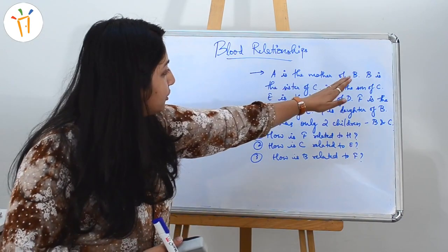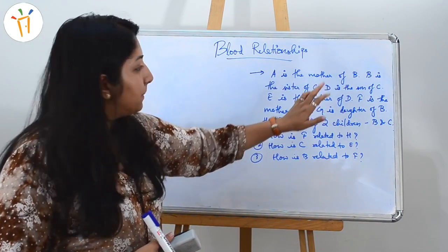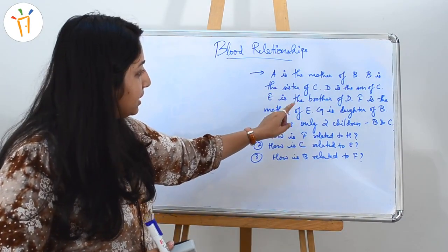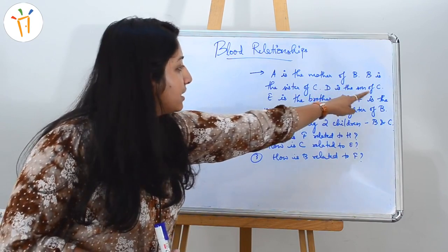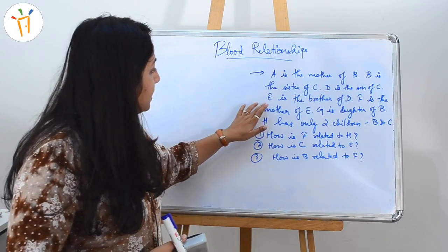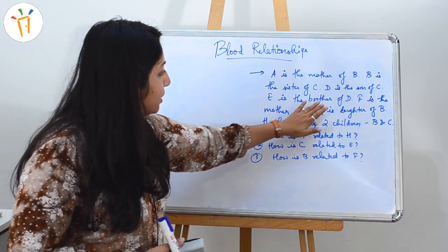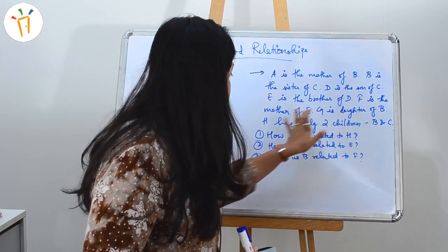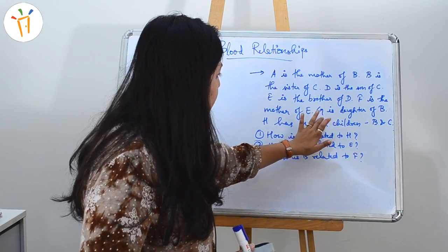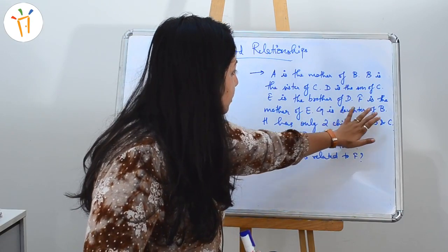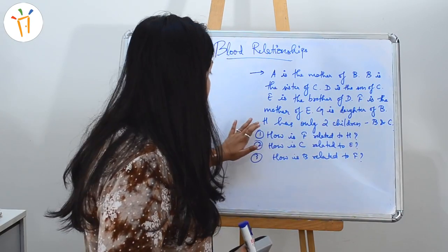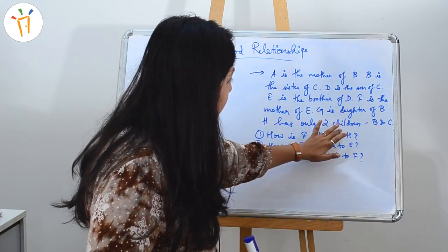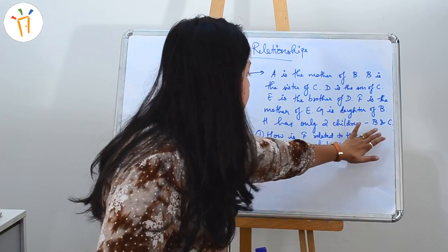A is the mother of B. B is the sister of C. D is the son of C. E is the brother of D. F is the mother of E. G is the daughter of B. And H has only two children, B and C.